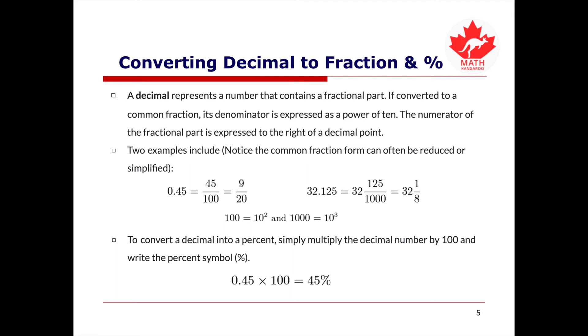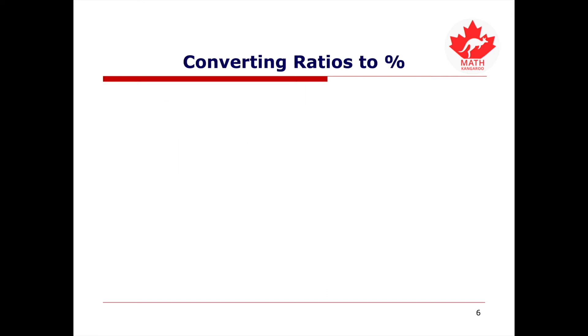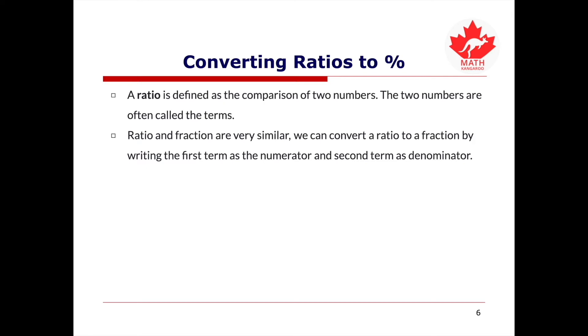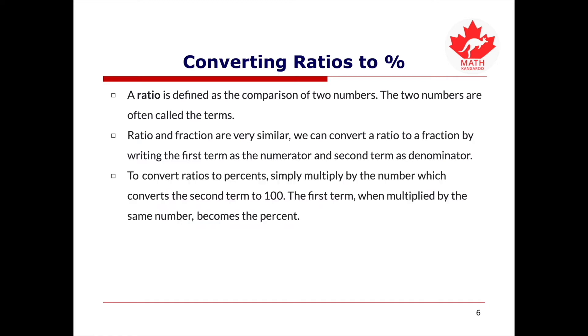How do we convert ratios to percent? A ratio is defined as a comparison of two numbers. The two numbers are often called the terms. Ratio and fraction are very similar. We can convert a ratio to a fraction by writing the first term as the numerator and the second term as the denominator. To convert ratios to percents, we simply multiply by the number which converts the second term to 100. The first term multiplied by the same number becomes the percent.